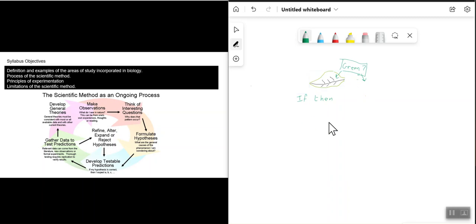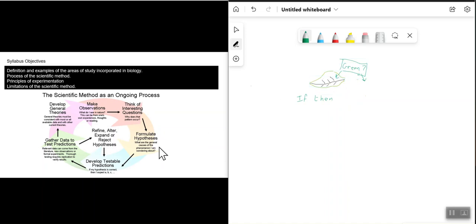The next part is to gather data and test your prediction — come up with some kind of experiment to gather data and answer the question you've asked. After gathering data and carrying out the test, you might find that your question has been answered or it has not. You will then refine, alter, expand, or reject your hypothesis. For example, you might change your hypothesis from a chemical explanation to something to do with light shining on the plant.